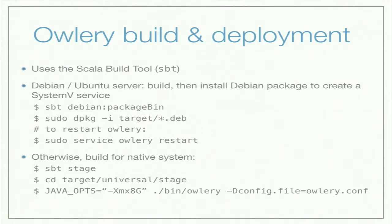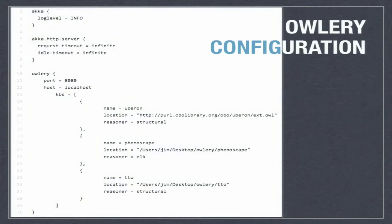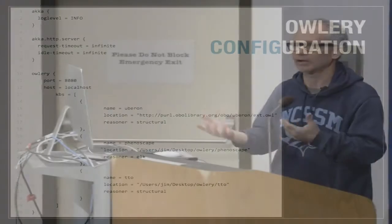In terms of how it's built and deployed, you can do a native build if you want to — the Scala build tool allows you to build a Debian package which you can then install. However, it's actually much easier: there's a pre-built Docker container that you can just pull down and run. The only thing that needs to be done is map a configuration file into the container, which configures the port you want it on and the knowledge bases — i.e., the ontologies — that you want to be reasoned over and with which reasoner.